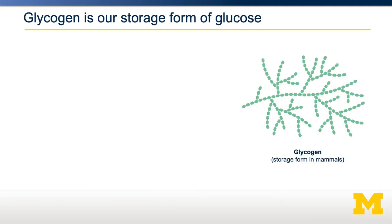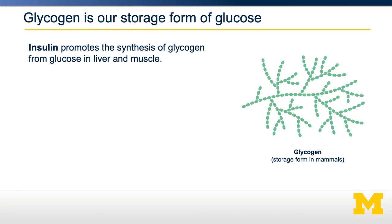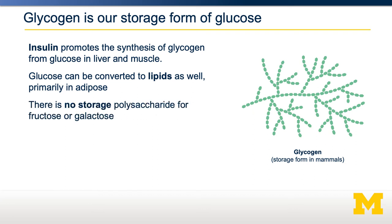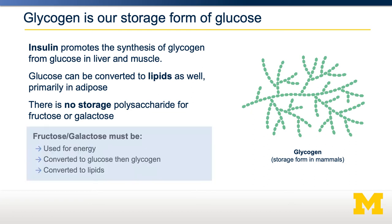Once inside the cell, glucose is stored as a carbohydrate called glycogen. Synthesis of glycogen is promoted by insulin. Glycogen is a polysaccharide containing alpha-1,4 and alpha-1,6 linkages of glucose. Glucose can also be converted into lipids, primarily in adipose tissue. Importantly, there is no storage polysaccharide for fructose or galactose. That means fructose and galactose in our diet must either be used for energy, converted into glucose, or converted into lipids – but cannot be stored as a polysaccharide containing only fructose or galactose.